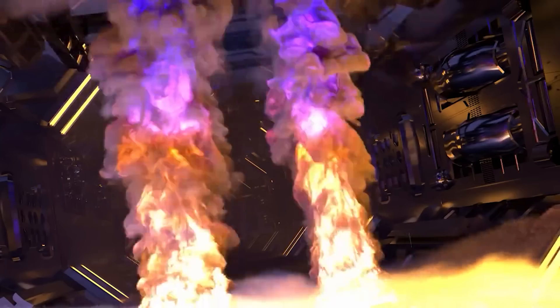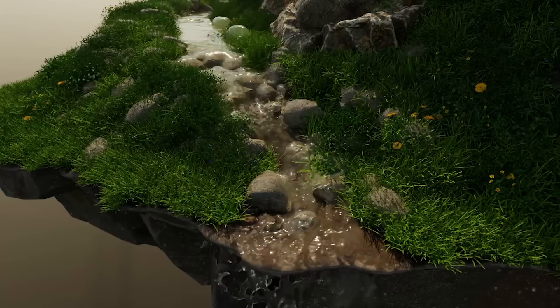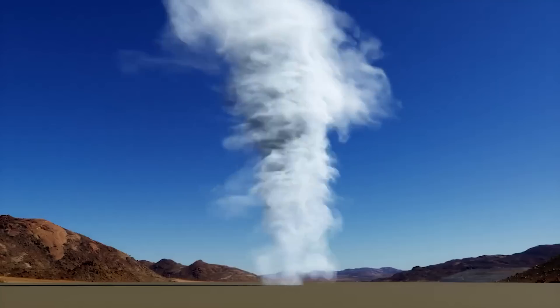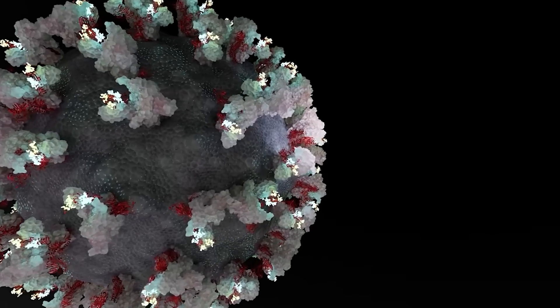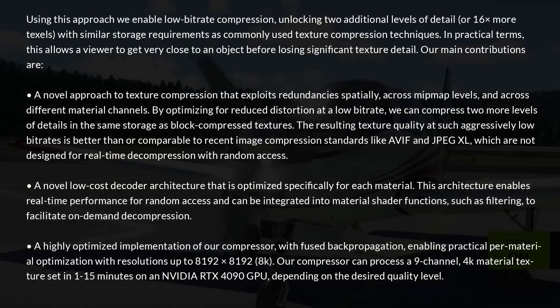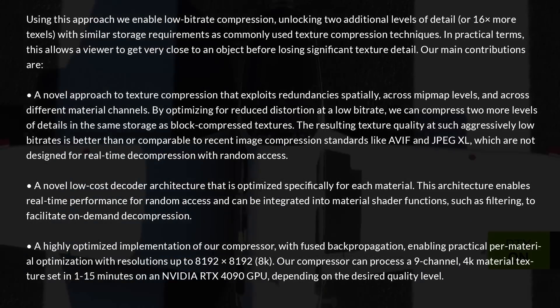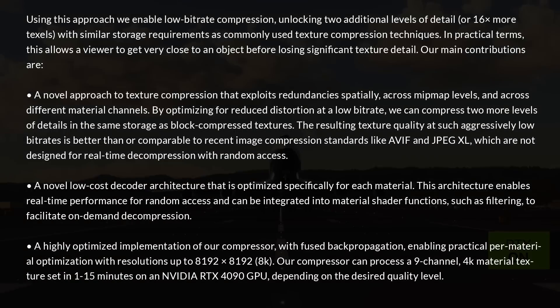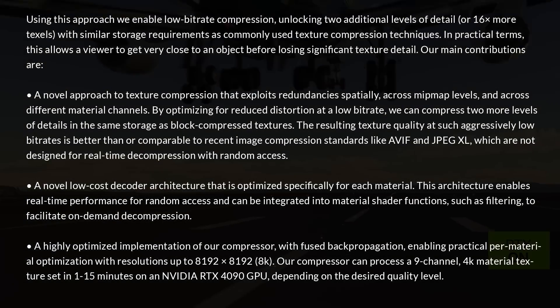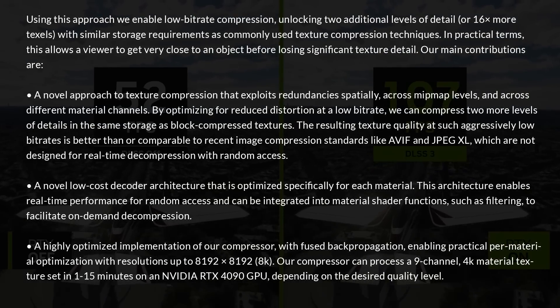This algorithm, BC, is actually standard for a lot of GPU-based texture compression, to my personal understanding — so if I'm wrong, please let me know in the comments. I'd also like to add a couple of quotes from NVIDIA themselves. Using this approach, they say, we enable low bitrate compression, unlocking two additional levels of detail, or 16x more texels, with similar storage requirements as commonly used texture compression techniques. In practical terms, this allows the viewer to get very close to an object before losing significant texture detail.